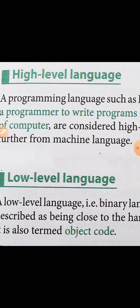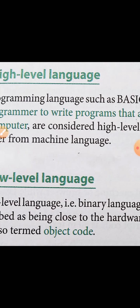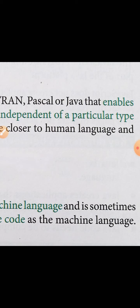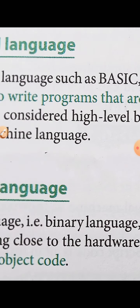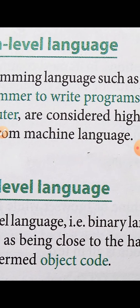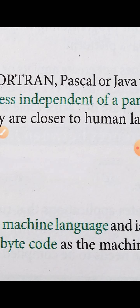So, high level languages include Basic, C, C++, Fortran, Pascal, and Java. These are high level because their programming is done in a way that is more or less independent of a particular type of computer — they are closer to human language. When we write a program in high level language, it is written in human language, then after compiling and running it is converted into machine language, i.e., bytecode. Low level language is binary language, also called object code or bytecode, because it is machine language.